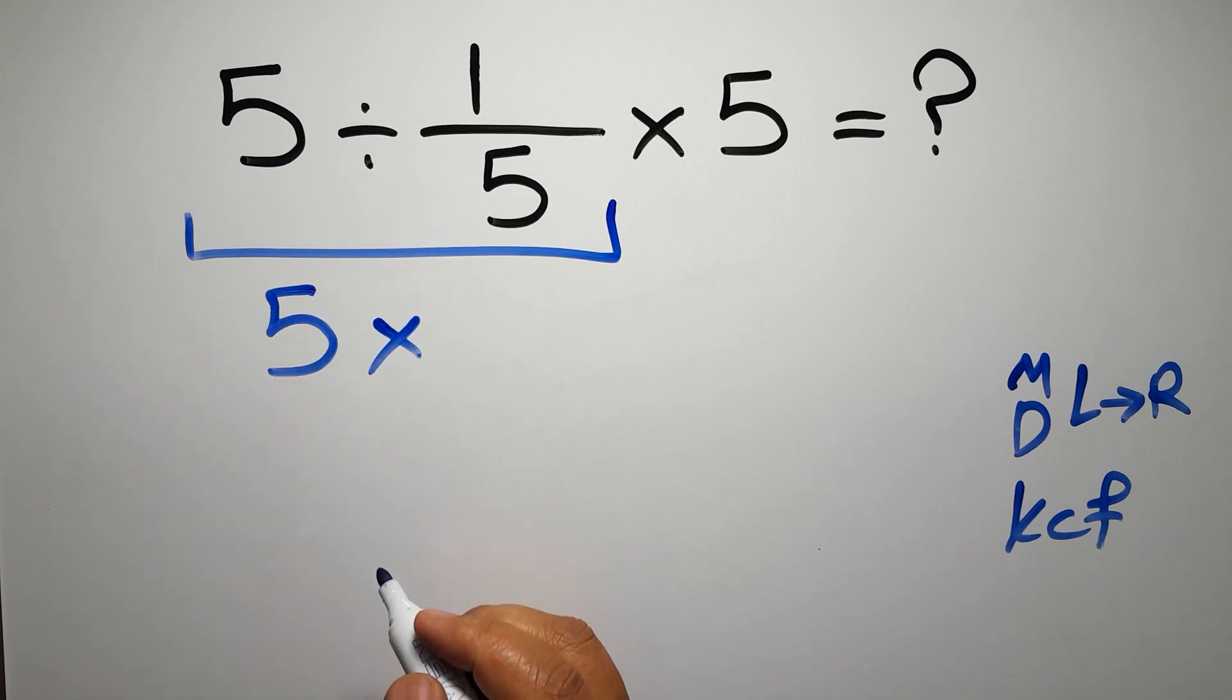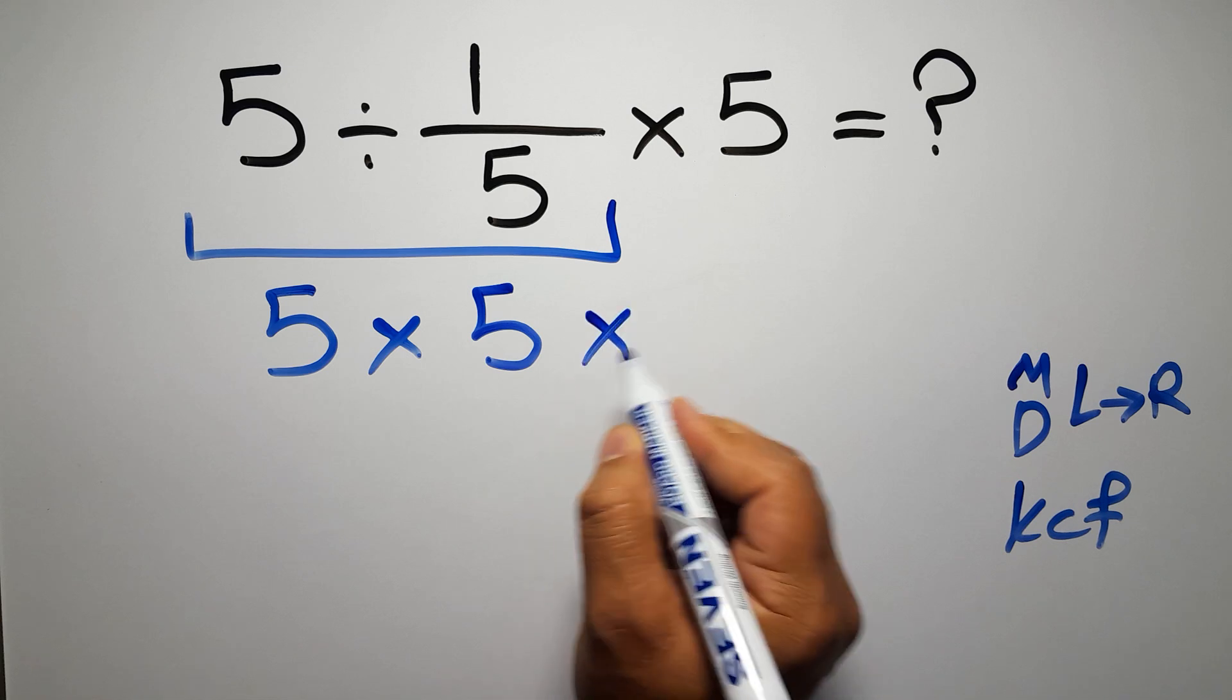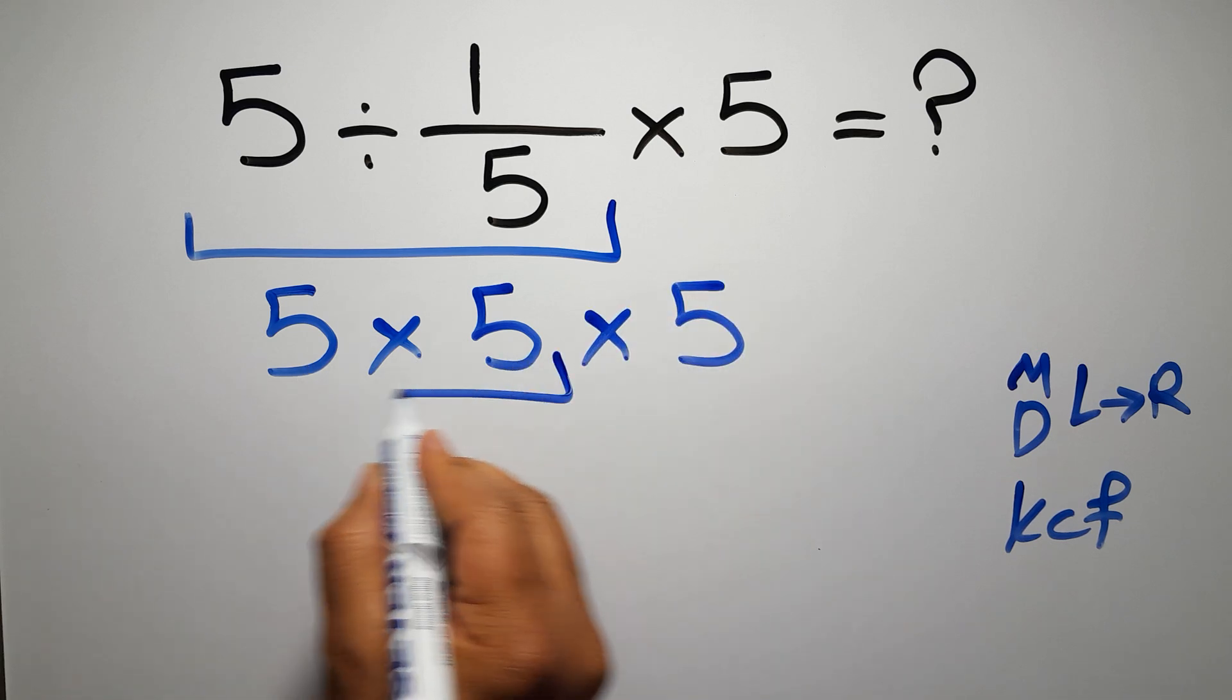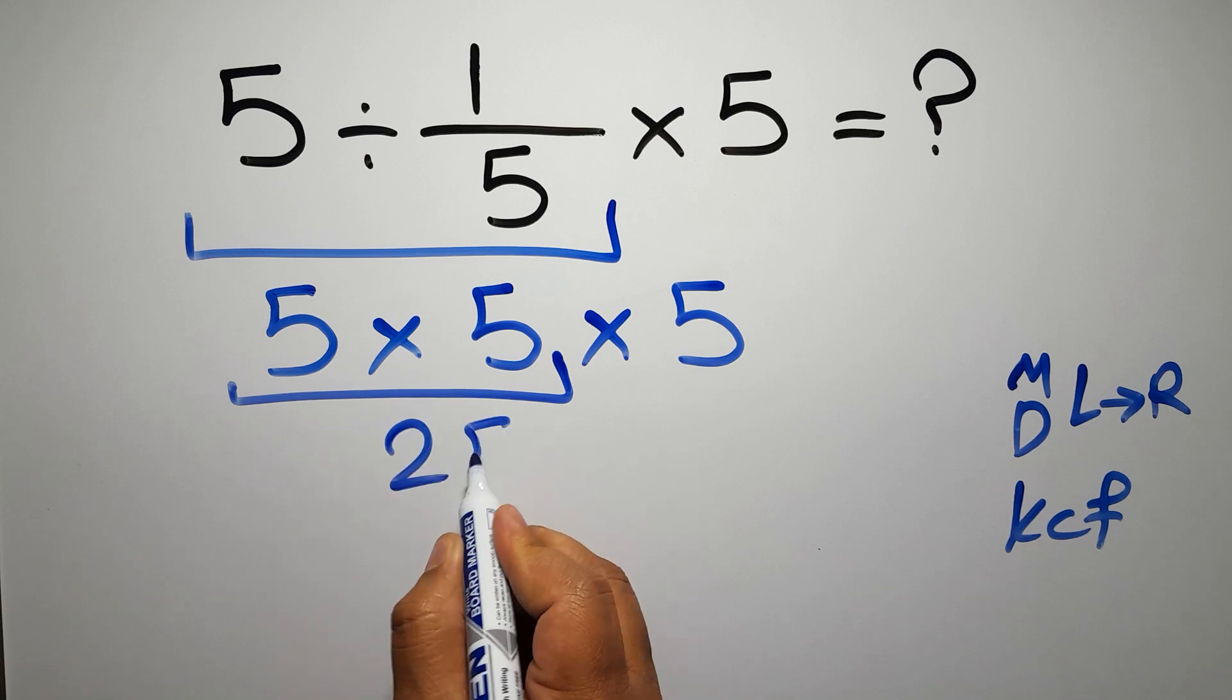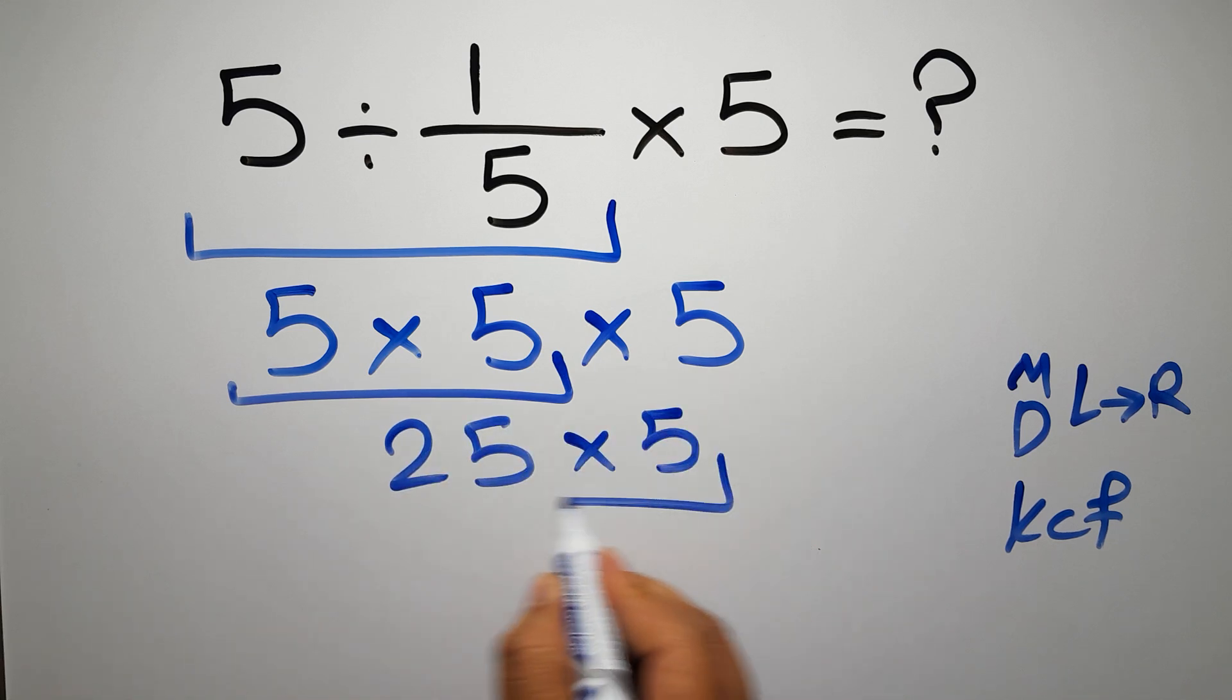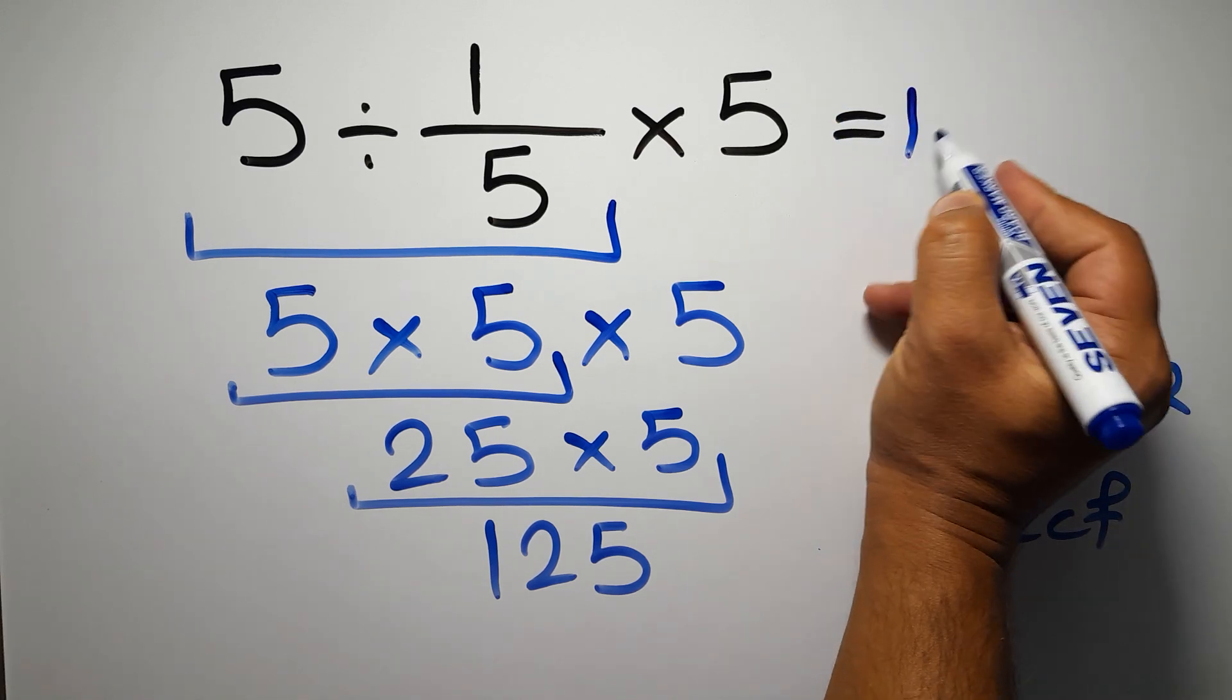And again, here we have times 5. 5 times 5 gives us 25, and 25 times 5 equals 125. This is our final answer to this problem. The correct answer is 125.